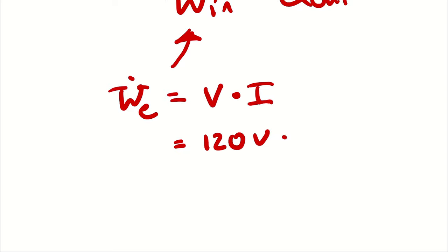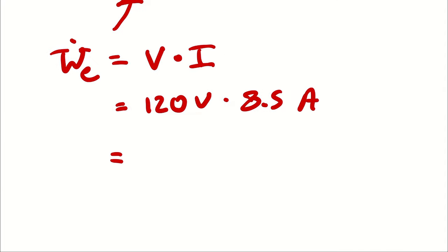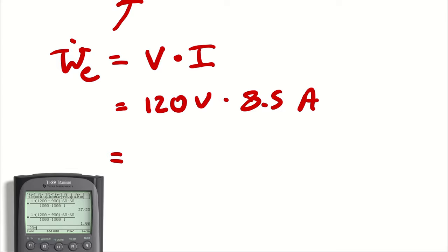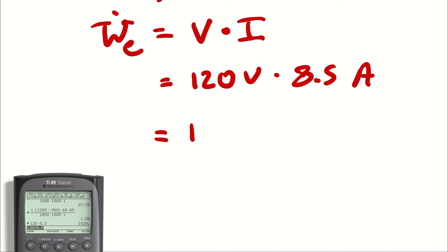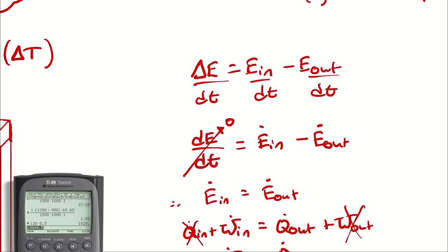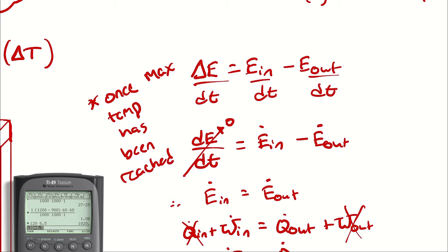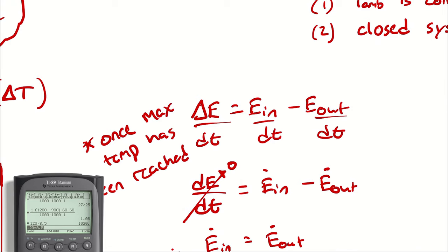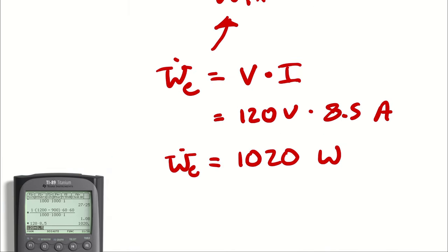Taking 120 volts multiplied by 8.5 amps, I get 1020 watts. This is all evaluated once maximum temperature has been reached. Therefore, Q-dot-out is also equal to 1020 watts.